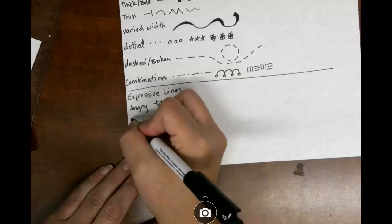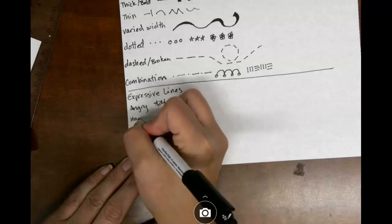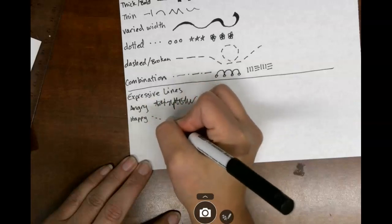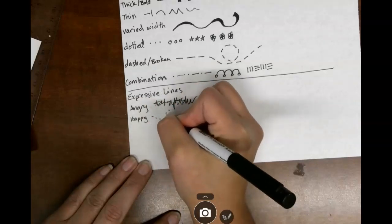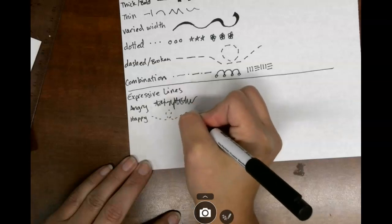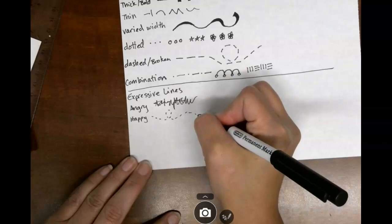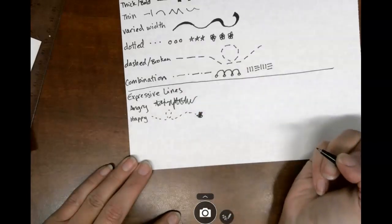Then we're going to do our happy line. Again, don't copy mine. Mine are going to be what works for me and my kind of happiness. It's not all about what my happiness is, it's about what yours is. There's my little be happy.